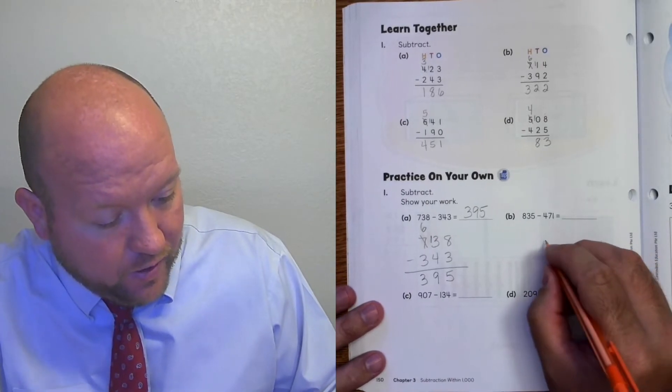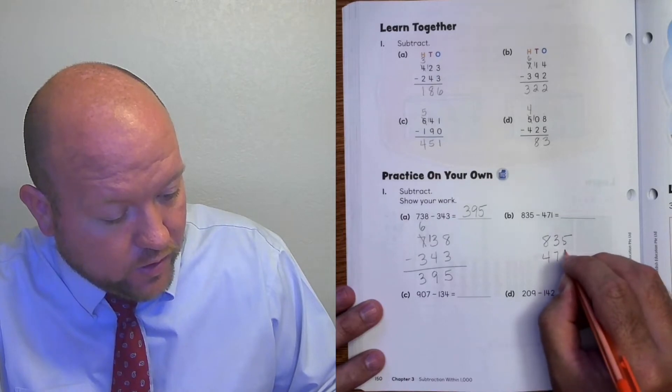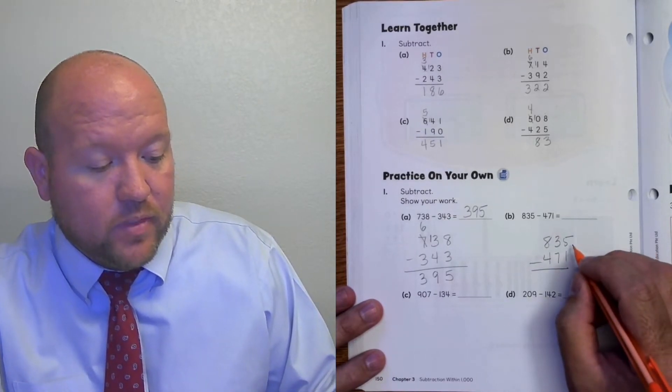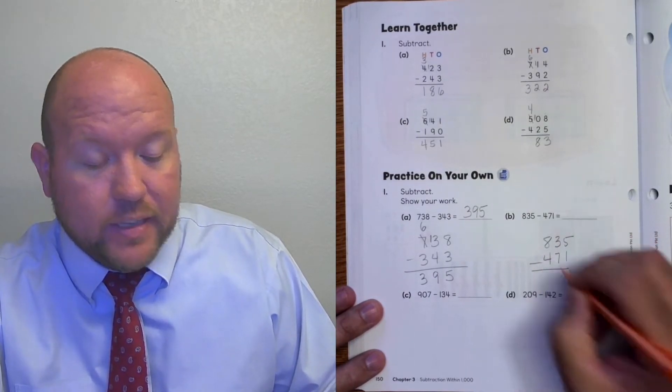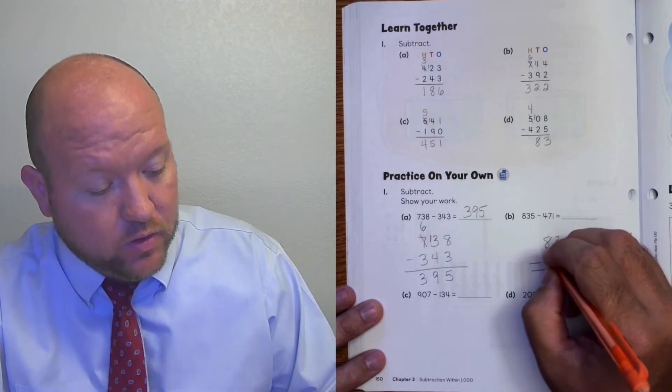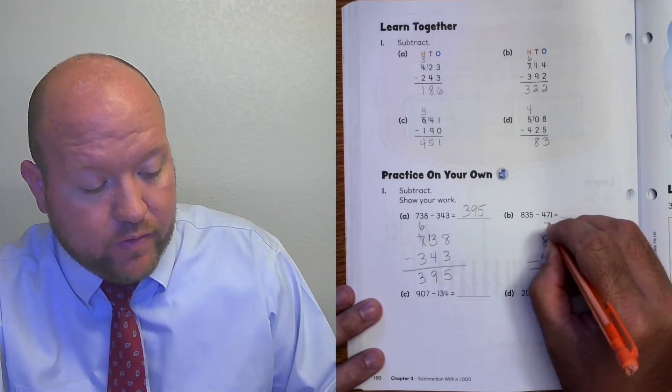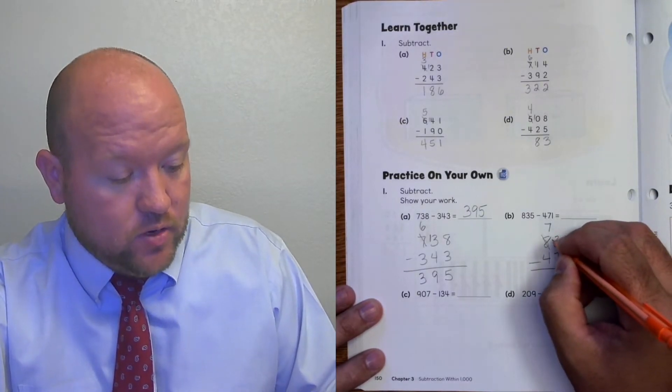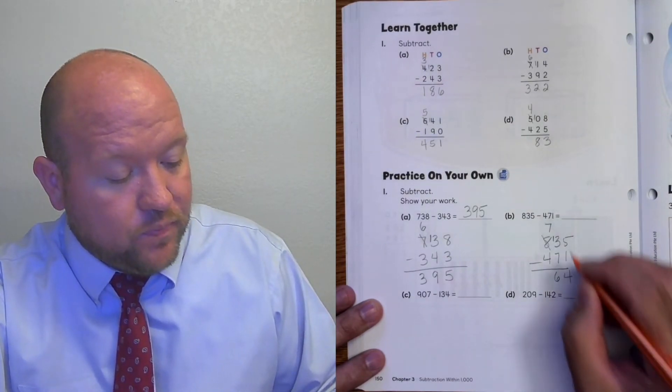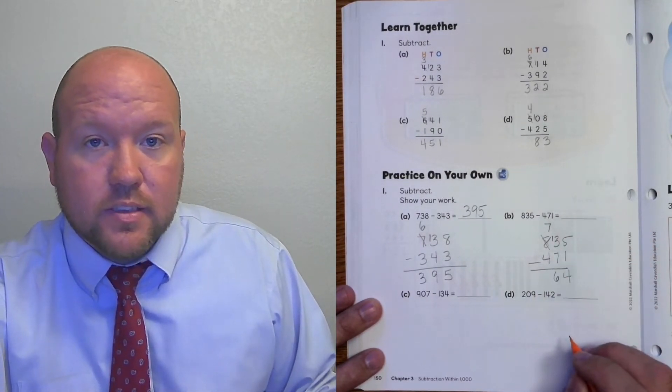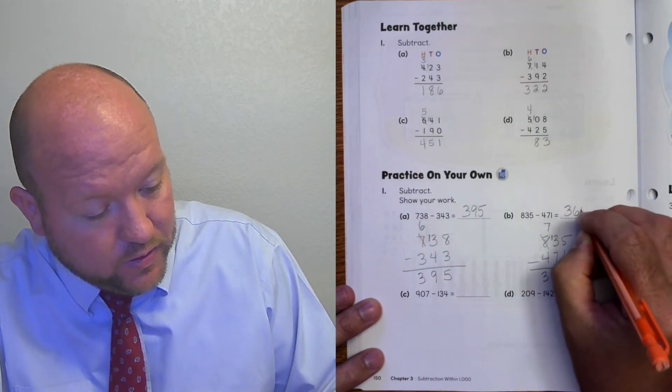Next we have 835 minus 471. 5 minus 1 is 4. 3 minus 7 is a negative number. So I need to regroup. This 8 becomes a 7. And the 3 becomes a 13. 13 minus 7 is 6. 7 minus 4 is 3. The answer is 364.